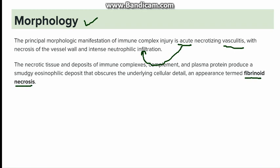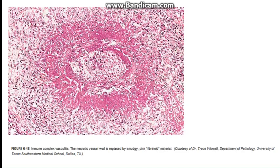We can see in the picture — here is the vessel wall, and this is the fibrinoid necrosis which is seen in the case of immune complex diseases. This is smudgy eosinophilic in nature.